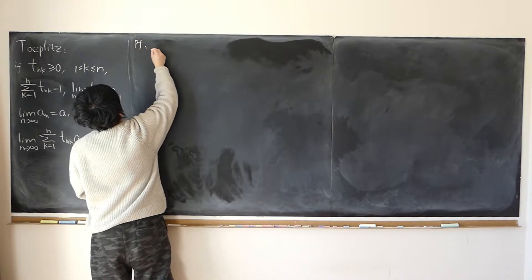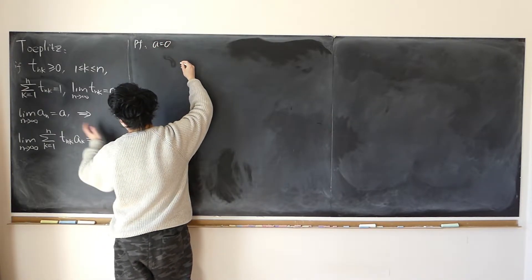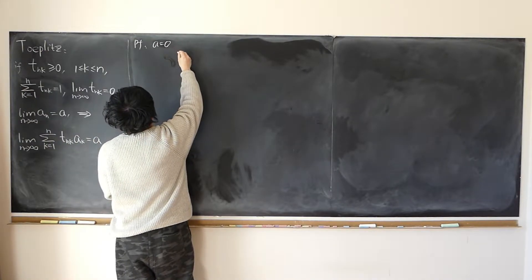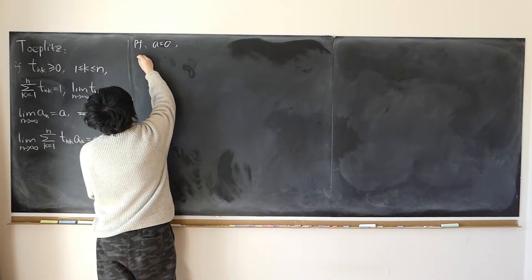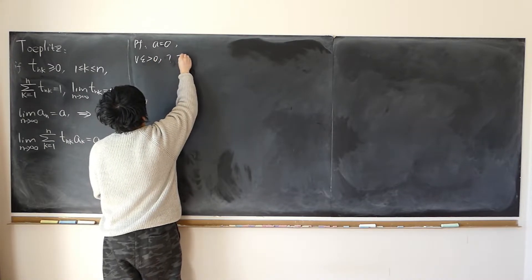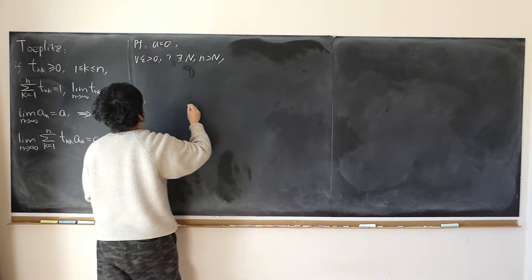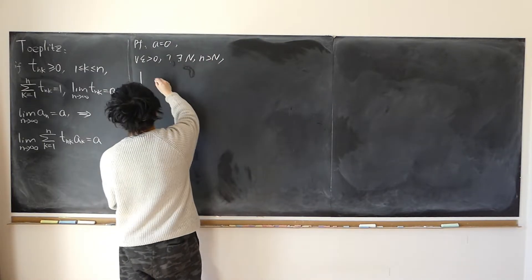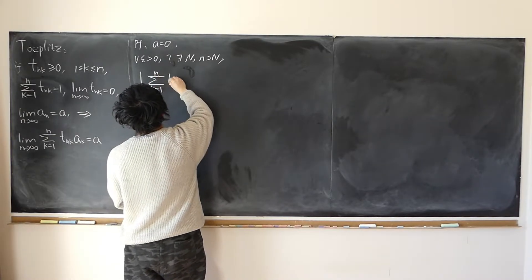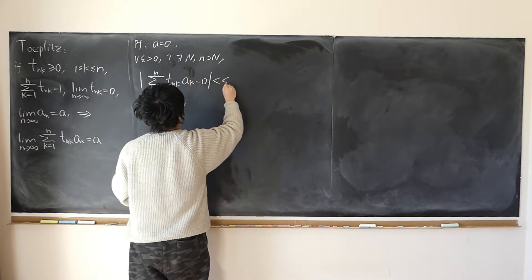Here's the proof. Special case: if a is equal to 0, then can this limit also be 0? That's what I want to prove. So, given any epsilon, can I find a capital N such that when little n is larger than this capital N, I can show that the absolute value of the sum from 1 up to n of t(n,k) times a(k) minus 0 can be small enough?